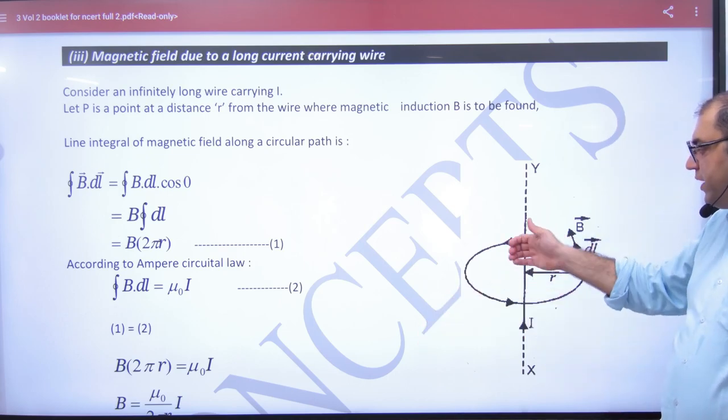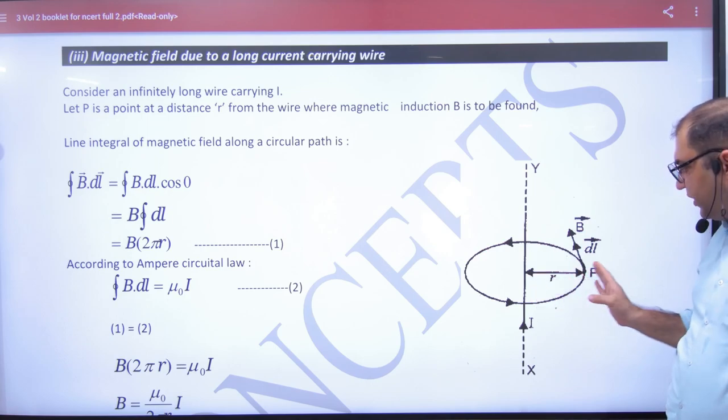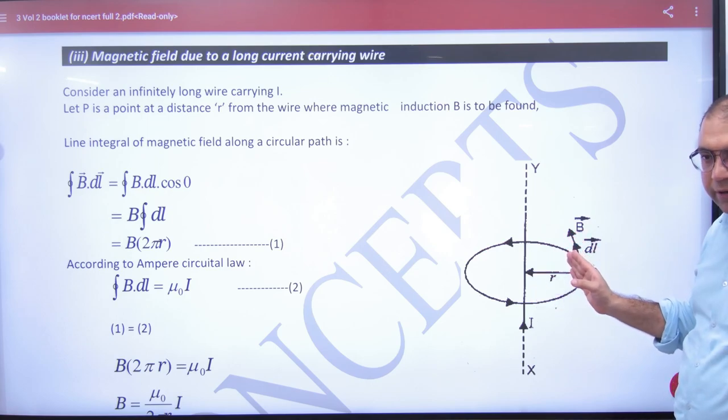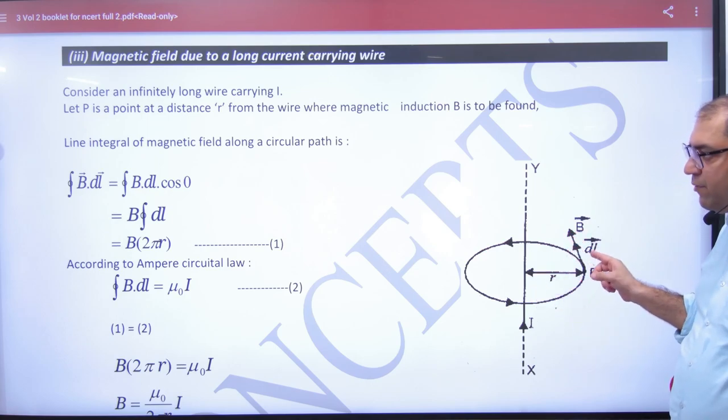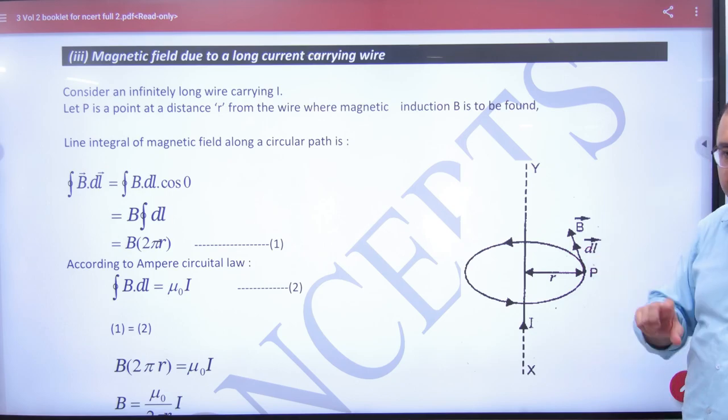Because the current is upward, the closed path will be like this. So dL will be inboard and B will be inboard. So in this small element, B dot dL will be B dL cos(0).